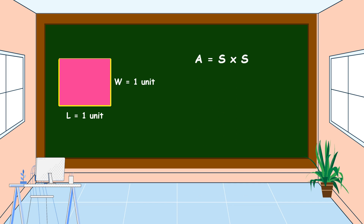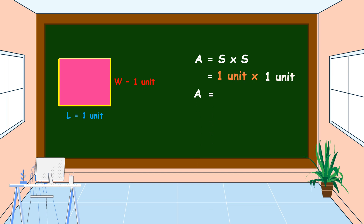Since a square has the same length and width, area is equal to side times side. The length is one unit and the width is also one unit, so one unit times one unit equals one square unit. Therefore, the area of this square is one square unit.